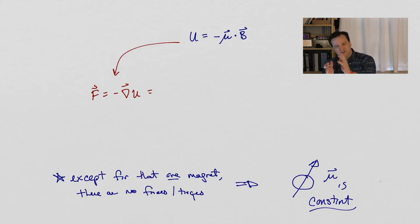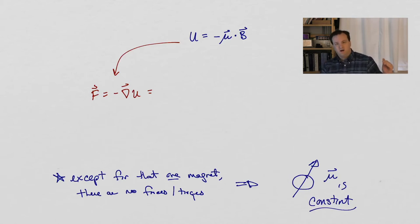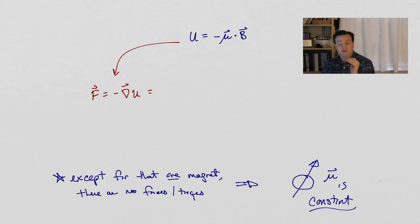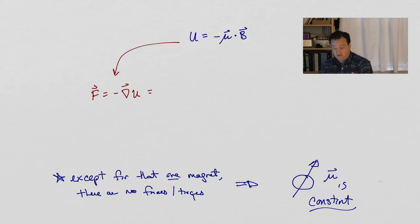Isn't it wonderful how all of your physics courses are already coming into play in this first lecture of quantum mechanics? So to recap quickly: I have atoms shooting across the room. They get near this magnet and they're going to experience a force if there's a gradient of the potential energy that describes the interaction of the magnetic dipole moment and the magnetic field. So in order to get a force, I need to have a gradient of the potential energy.